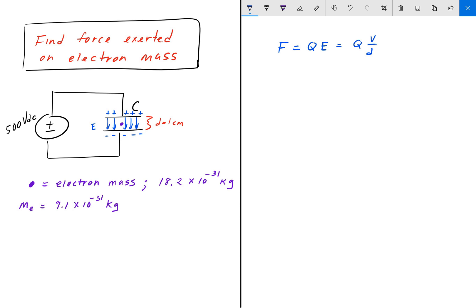We're given V, which is 500 volts DC, and we know that D is one centimeter, but now we just got to find Q. So what is Q?